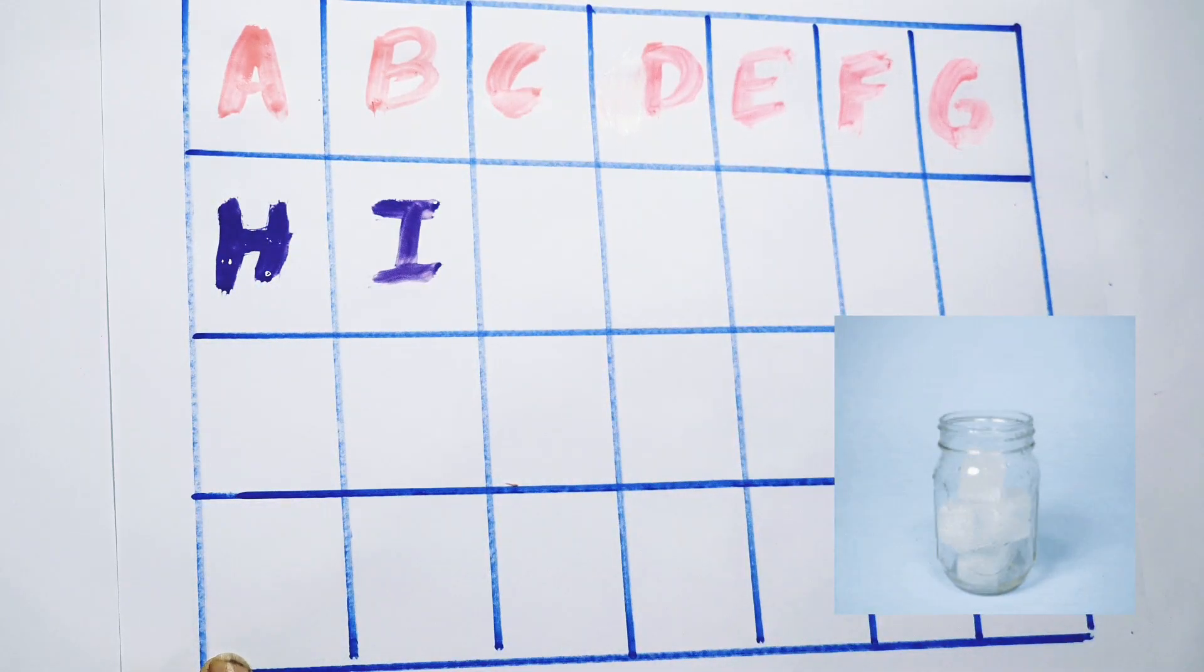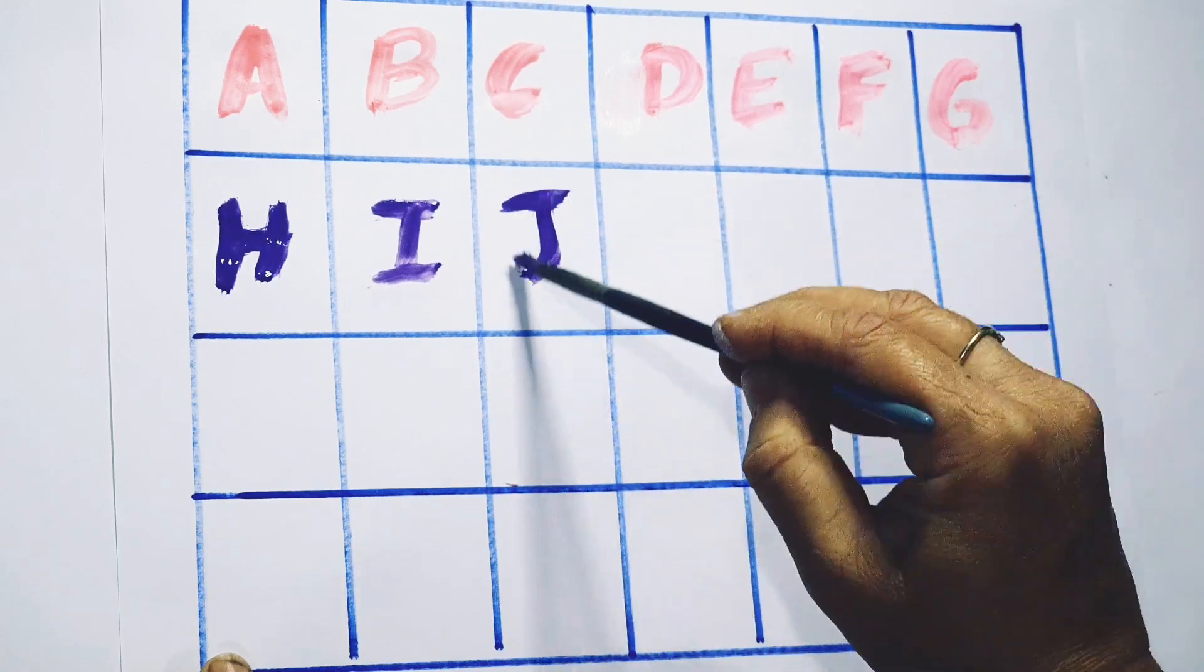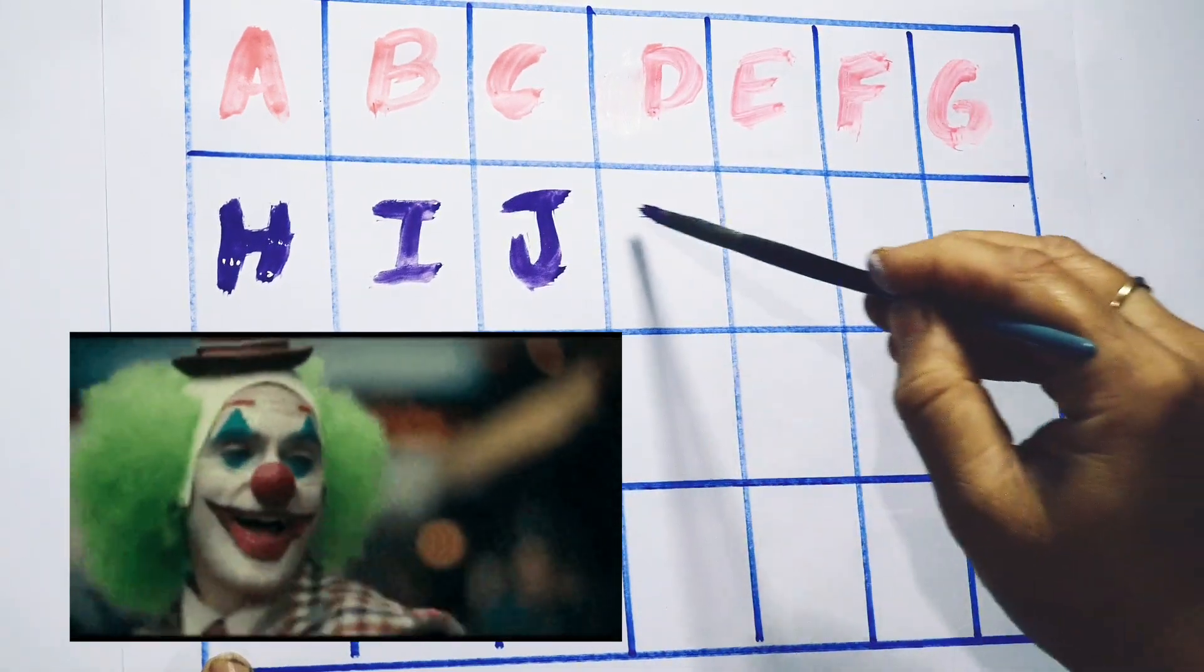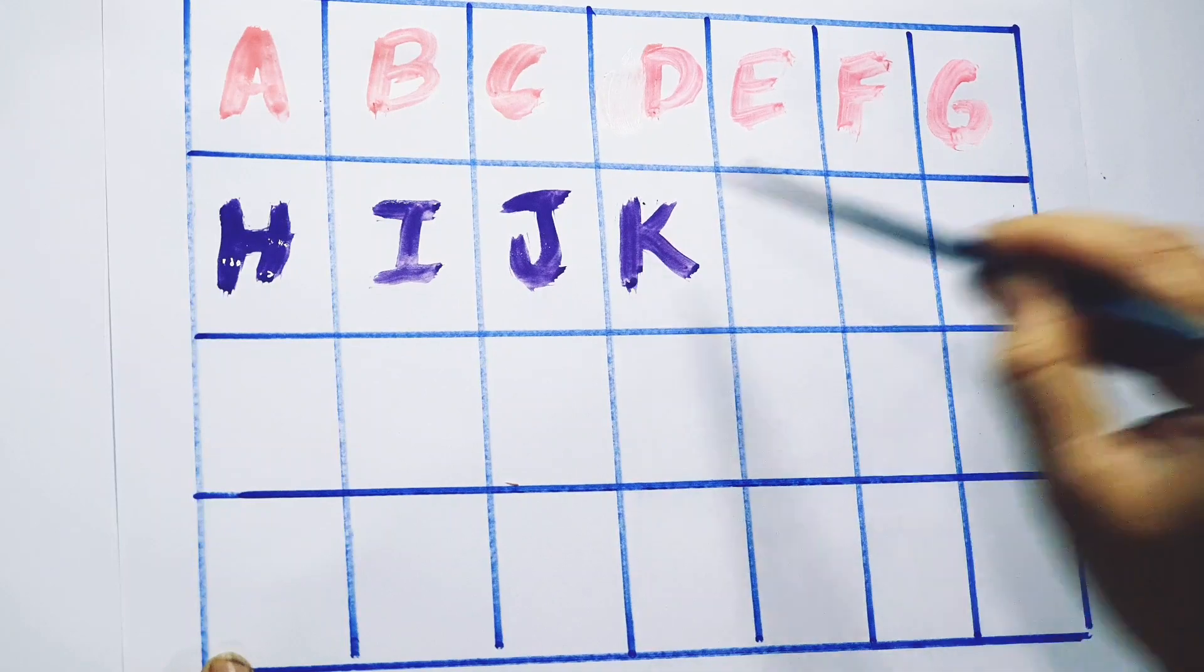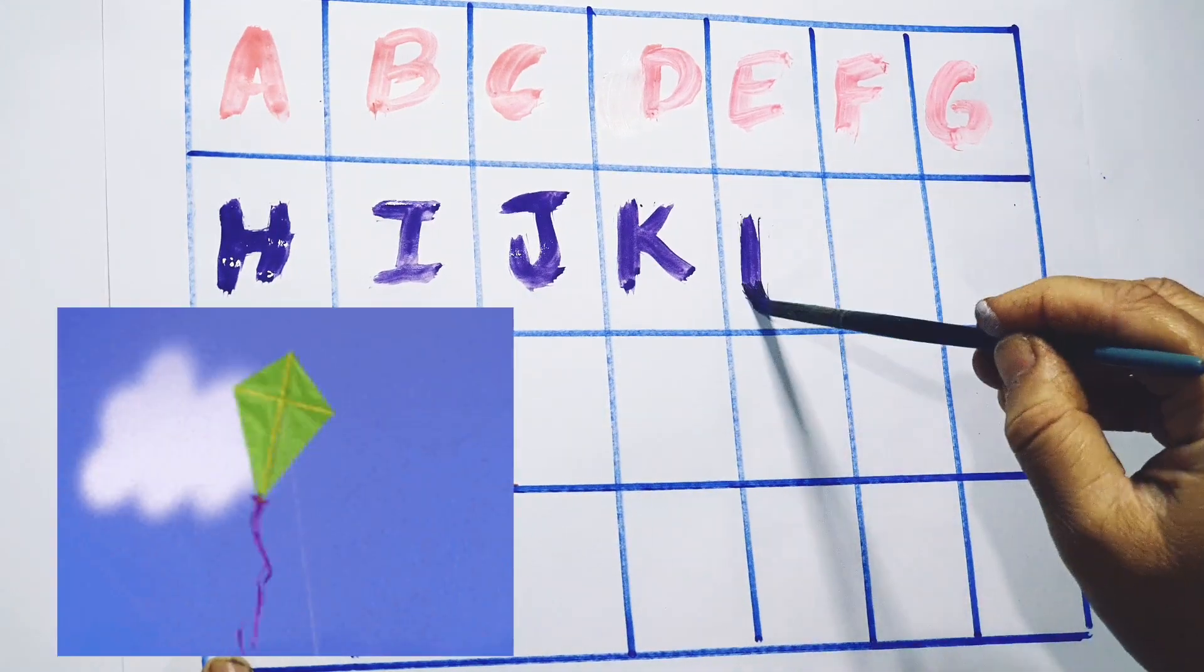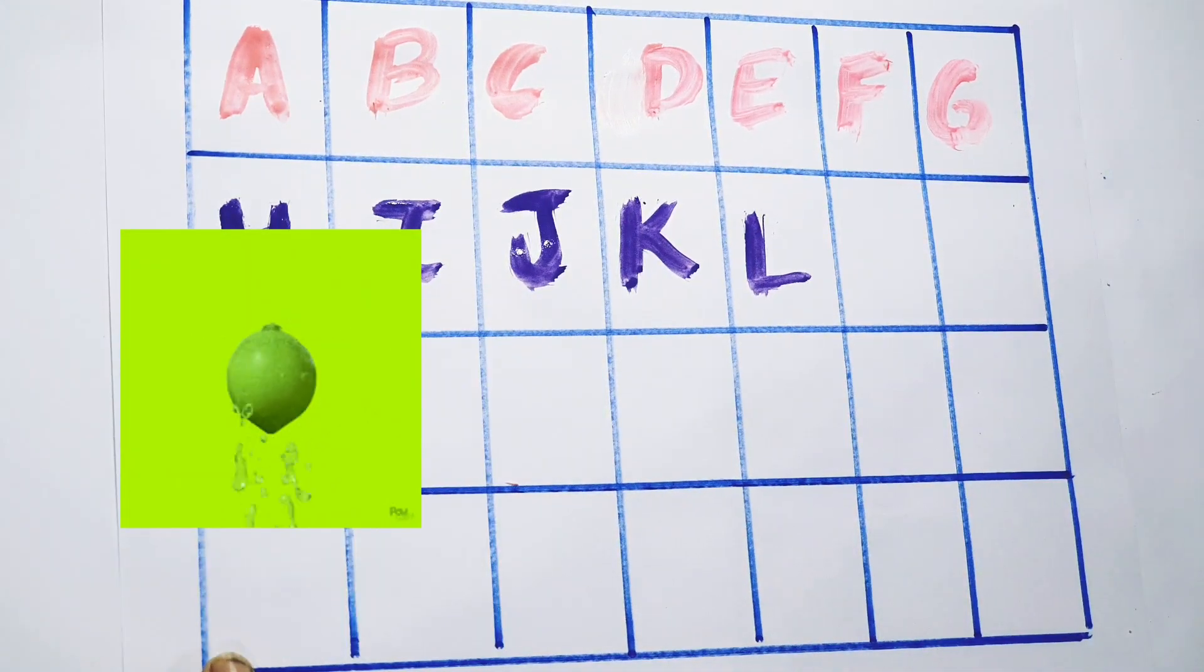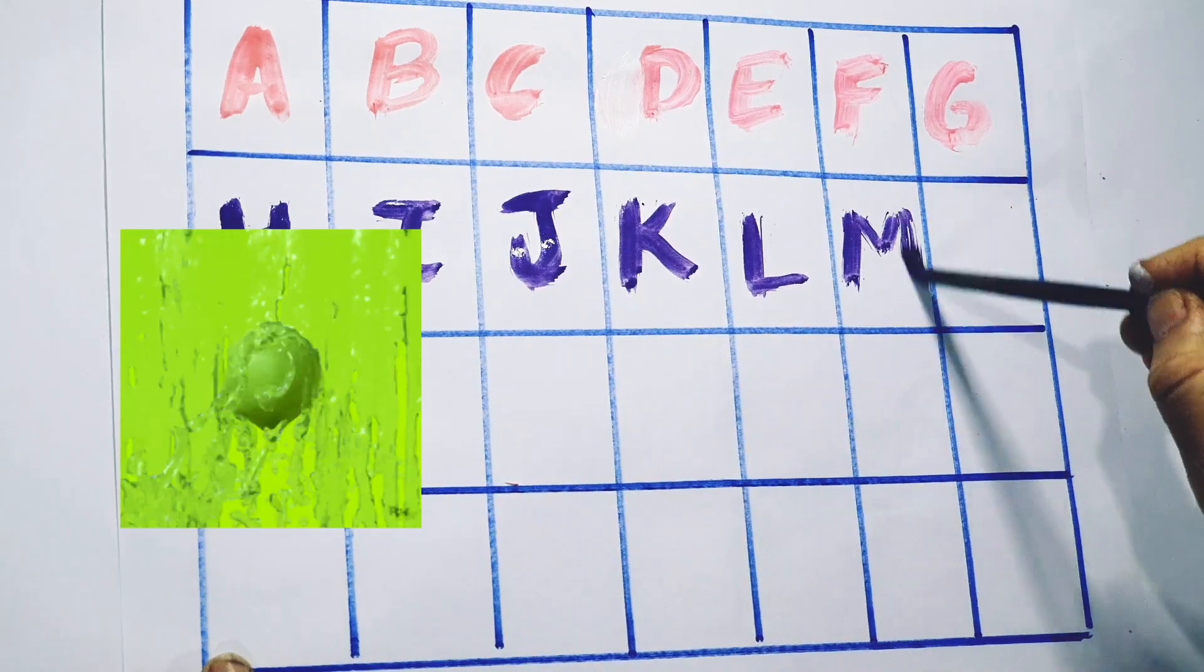I for eyes, J for joker, K for kite, L for lime. M for mango.